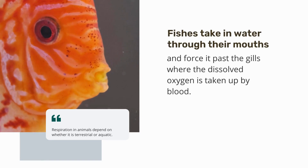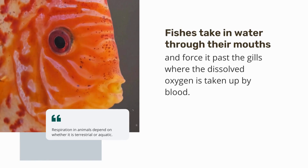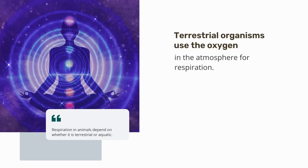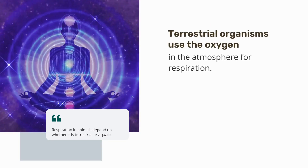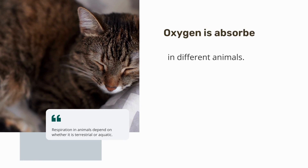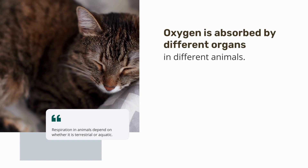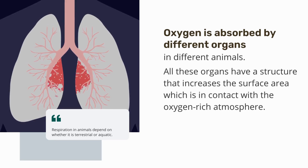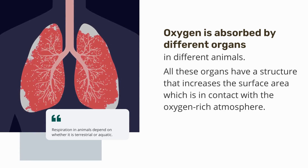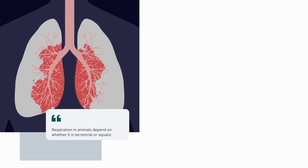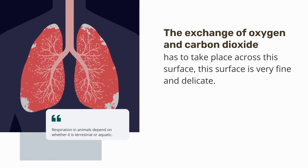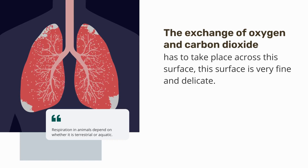Fish take water through their mouths and force it past the gills, where dissolved oxygen is taken up by blood. Terrestrial organisms use atmospheric oxygen for respiration, absorbed by different organs in different animals. All these organs have a structure that increases the surface area in contact with the oxygen-rich atmosphere. Since the exchange of oxygen and carbon dioxide must take place across the surface, that surface is very fine and delicate, and is usually placed within the body.